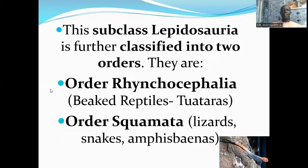The subclass Lepidosauria is further classified into two orders: the order Rhynchocephalia, which consists of primitive reptiles like the tuataras, and the order Squamata, which has the lizards, the snakes, and the amphisbaenians.